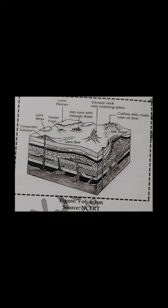Magma and lava can also be classified based on the percentage of silica: acidic (higher percentage of silica) to basic (lower percentage of silica). Pyroclastic material or tephra: ejected particles of different sizes, known collectively as pyroclastic material or tephra. Volcanoes can be classified on the basis of the nature of eruption, explosiveness, and the form, shape, and size developed at the surface. This in turn depends on the type or nature of magma involved — generally felsic (rich in iron and aluminum) or mafic (rich in magnesium and iron).